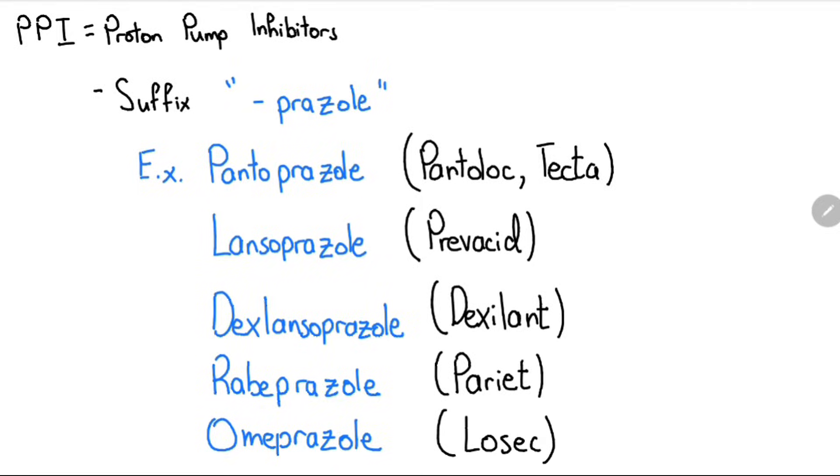How do proton pump inhibitors work? Generally, PPIs work by reducing the amount of excess acid produced by our stomach.